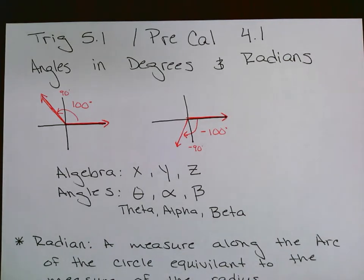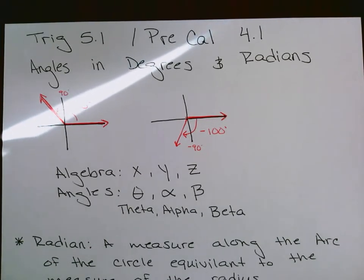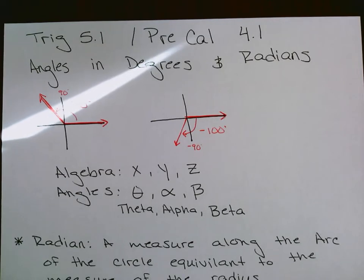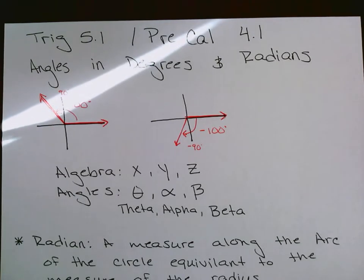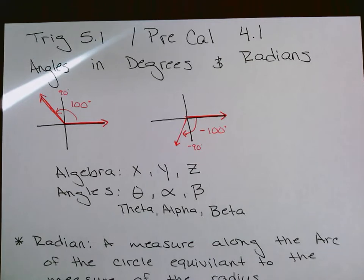A radian is a measure along the arc of the circle equivalent to the measure of the radius. So if the radius is R, one radian goes from here to here along the arc — a distance of R. Another set of that would be another R along the arc, and so on.